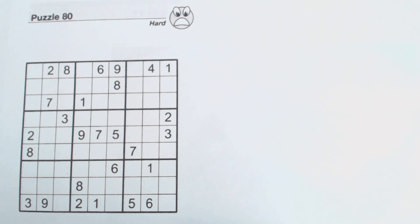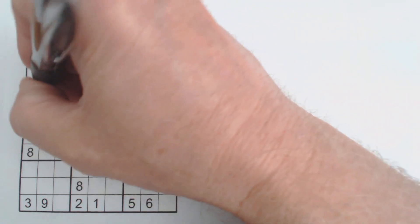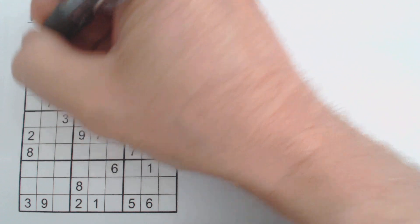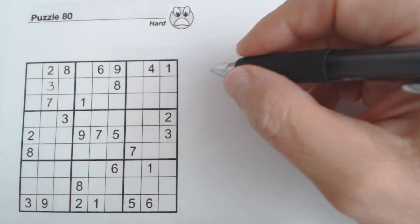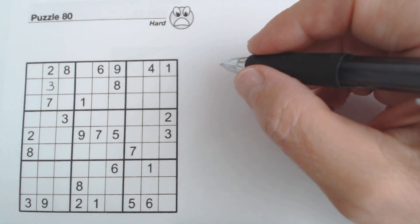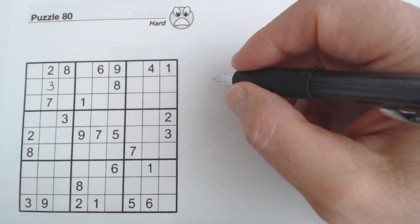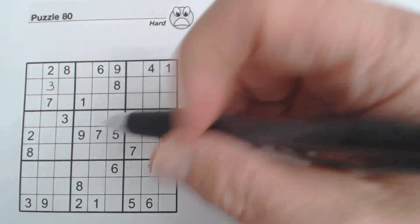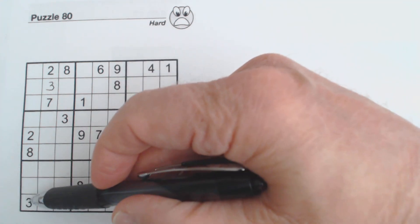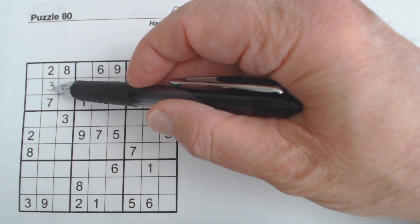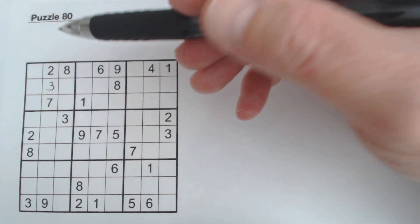I'm going to put the numbers in the same order that I did in the previous video. The 3 is pretty straightforward. We've got a 3 here and a 3 here, so that's the only 3 left in that section.